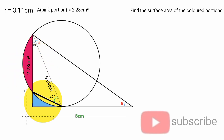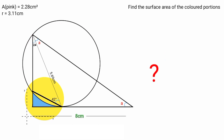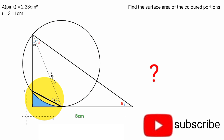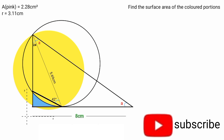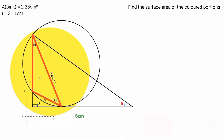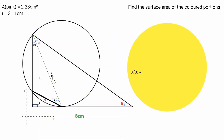Now coming to the blue portion — how can we find its area? This is straightforward. From this right angle triangle, if we subtract the surface area of segment C and triangle D, we are left with the surface area of portion B. So: area of B equals area of right angle triangle minus area of segment C minus area of triangle D.